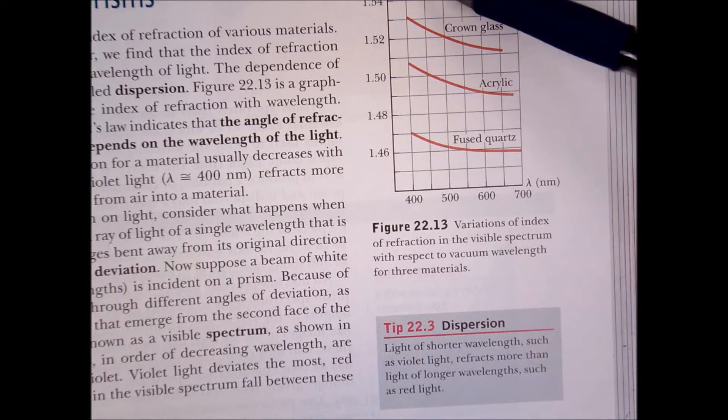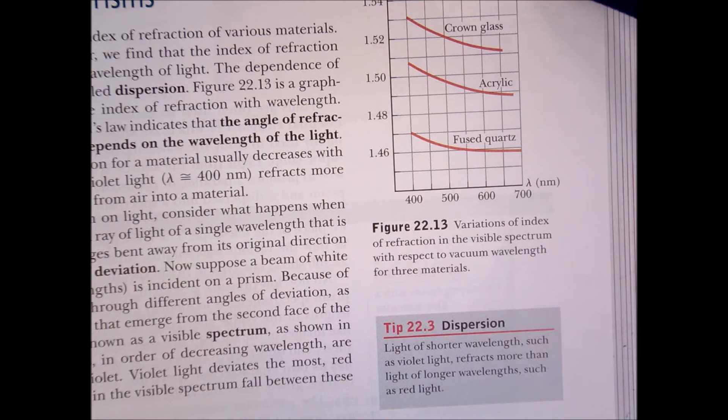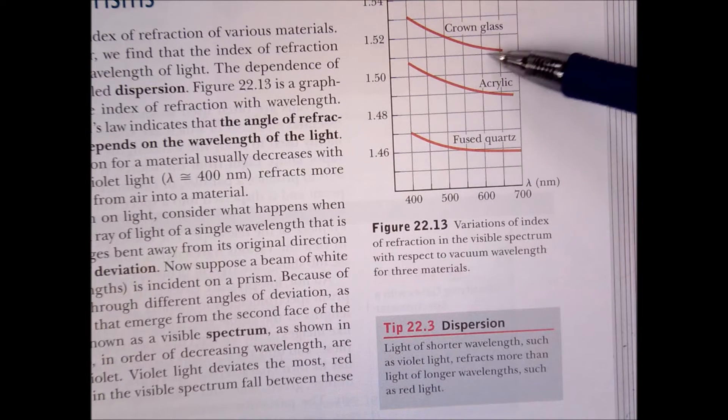So for example, violet for crown glass, violet is about 1.53. And for red, it's about 1.51. So it's changing.